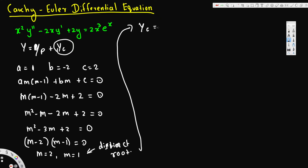Since we are getting distinct real roots, the complementary solution is yc = c₁x² + c₂x. Note that for a regular second order ODE we'd write c₁e^(2x) + c₂e^x, but for Cauchy-Euler we put x as the base and use m as the power — that's the only difference.